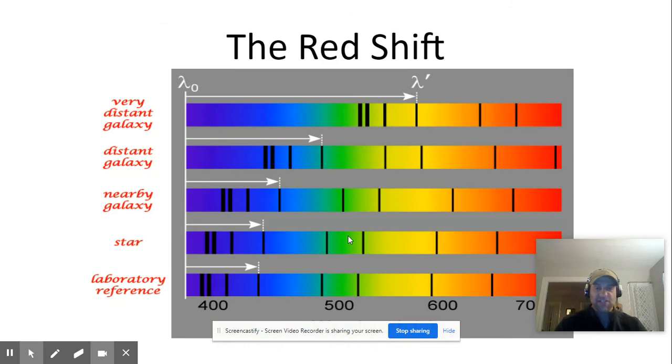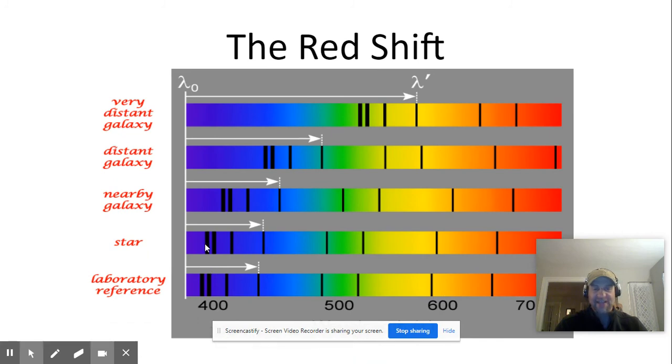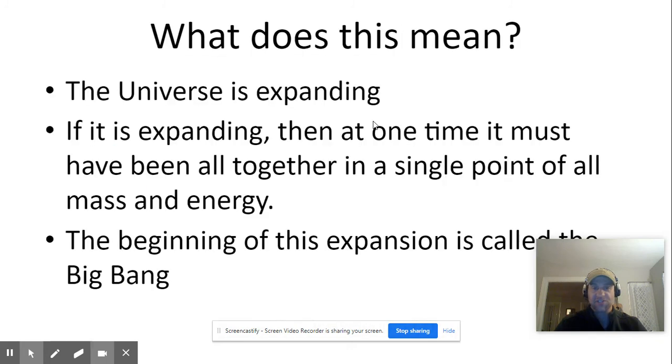So the question is, what happens when we look at stars and galaxies to the spectral lines from the hydrogen? This is a laboratory reference where the light is not moving. What we notice is that a star will show somewhat of a red shift, and as we go farther and farther and farther away from Earth, we see a bigger red shift.